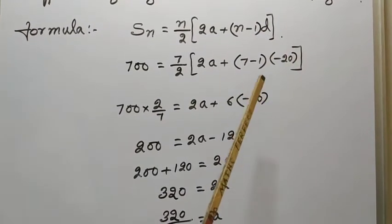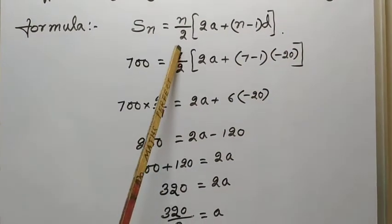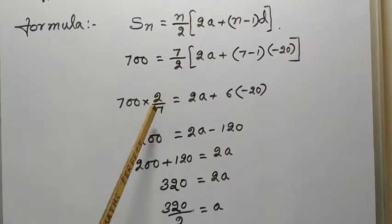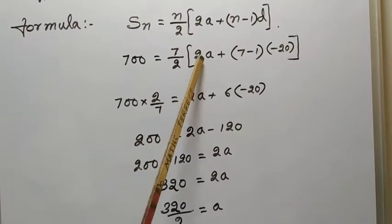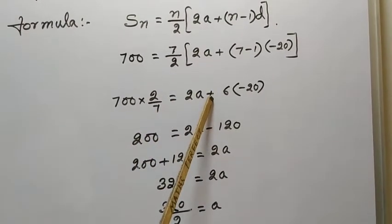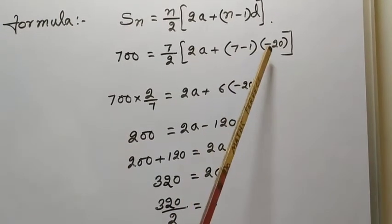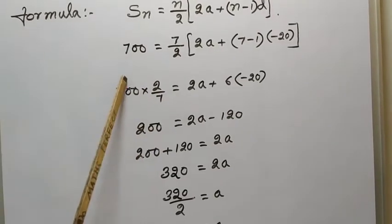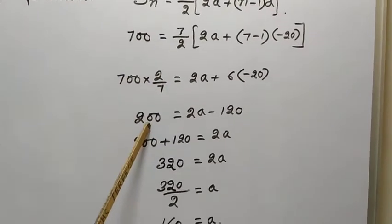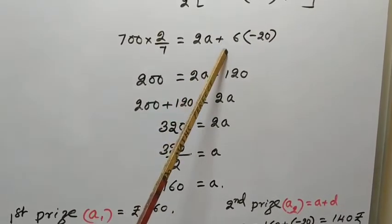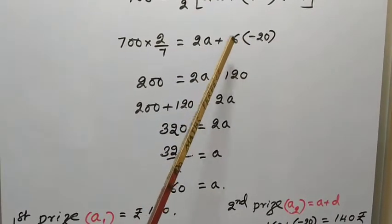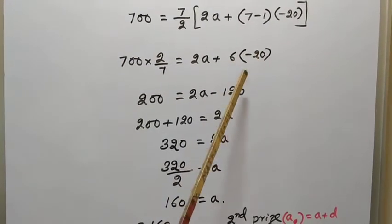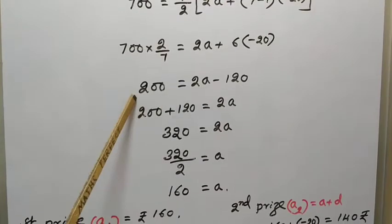Now cross multiply this 7 by 2. 2 goes to numerator, 7 comes to denominator. Equal to 2A plus 7 minus 1 means 6. 700 divided by 7 means 100 into 2, 200. That is equal to 2A plus, that means plus into minus changes to minus. 6 into 20, 120.